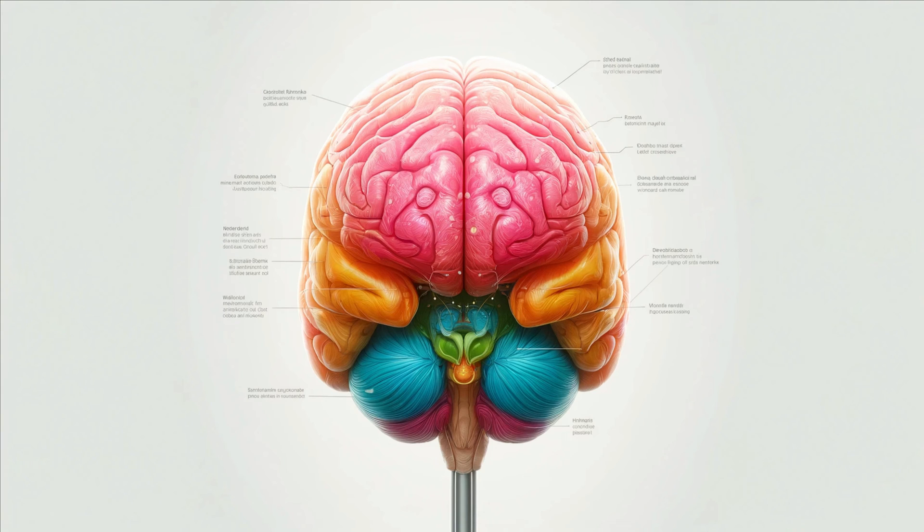The occipital lobe, located at the back, is all about visual processing. It helps you interpret the visual world around you.